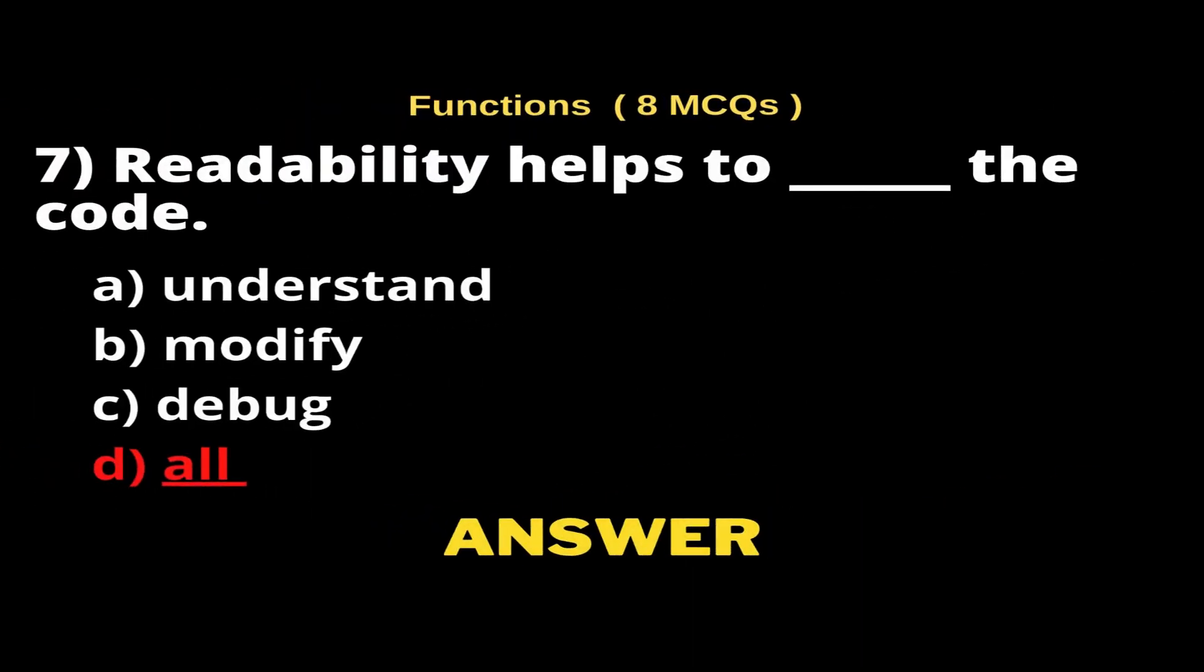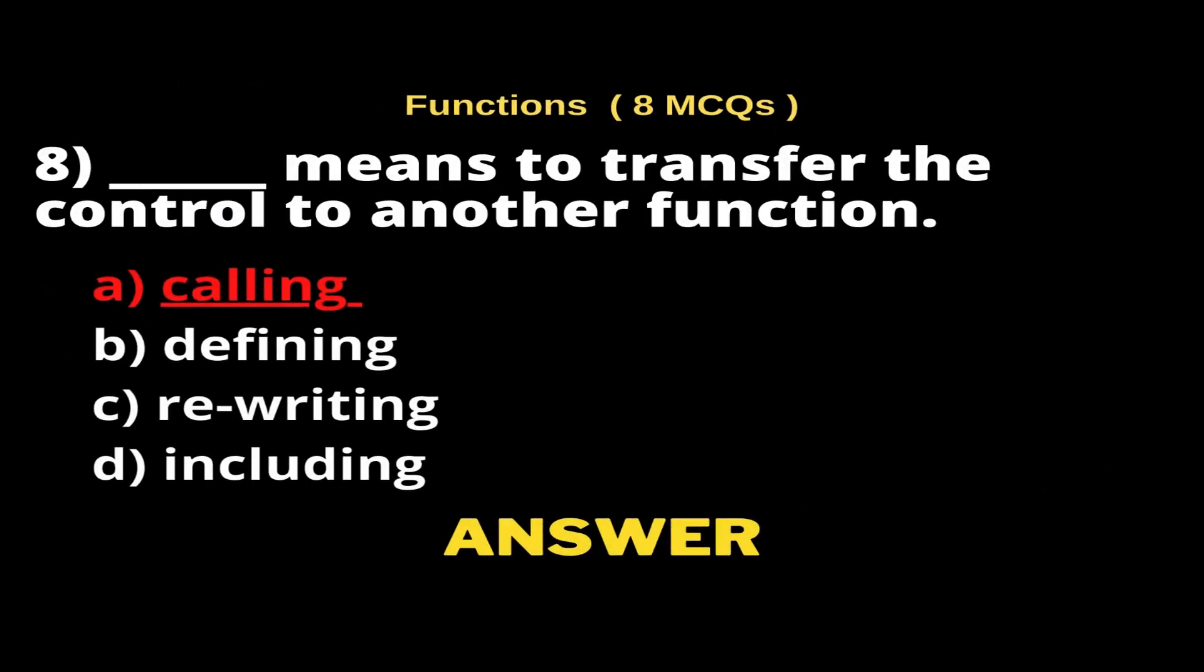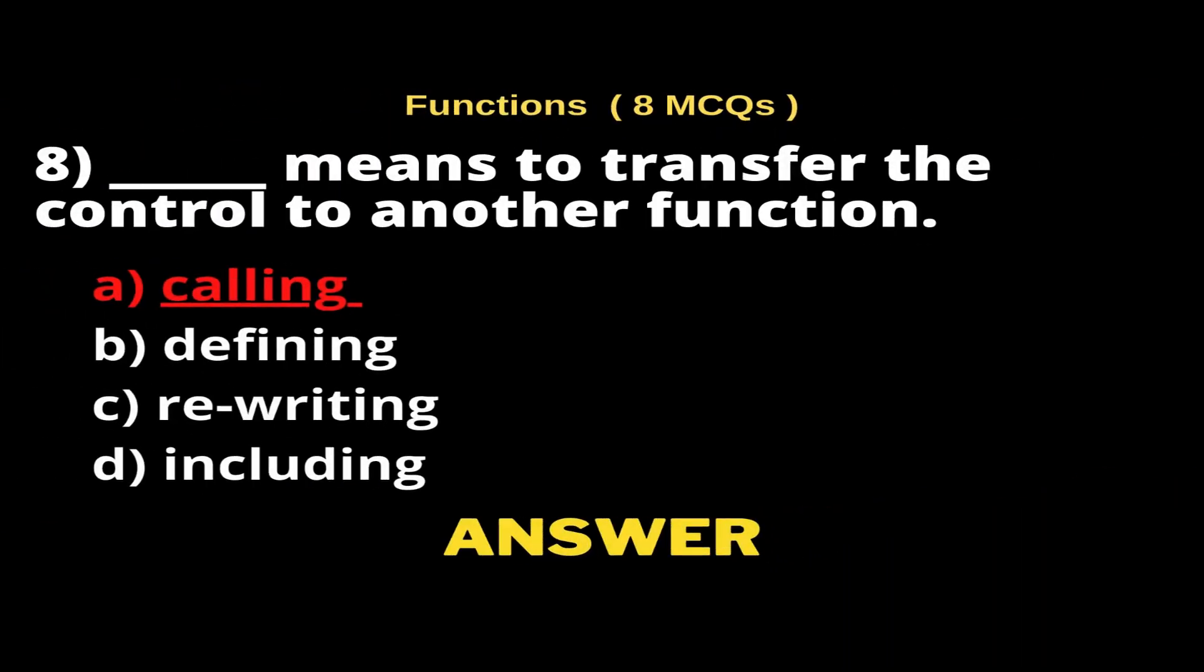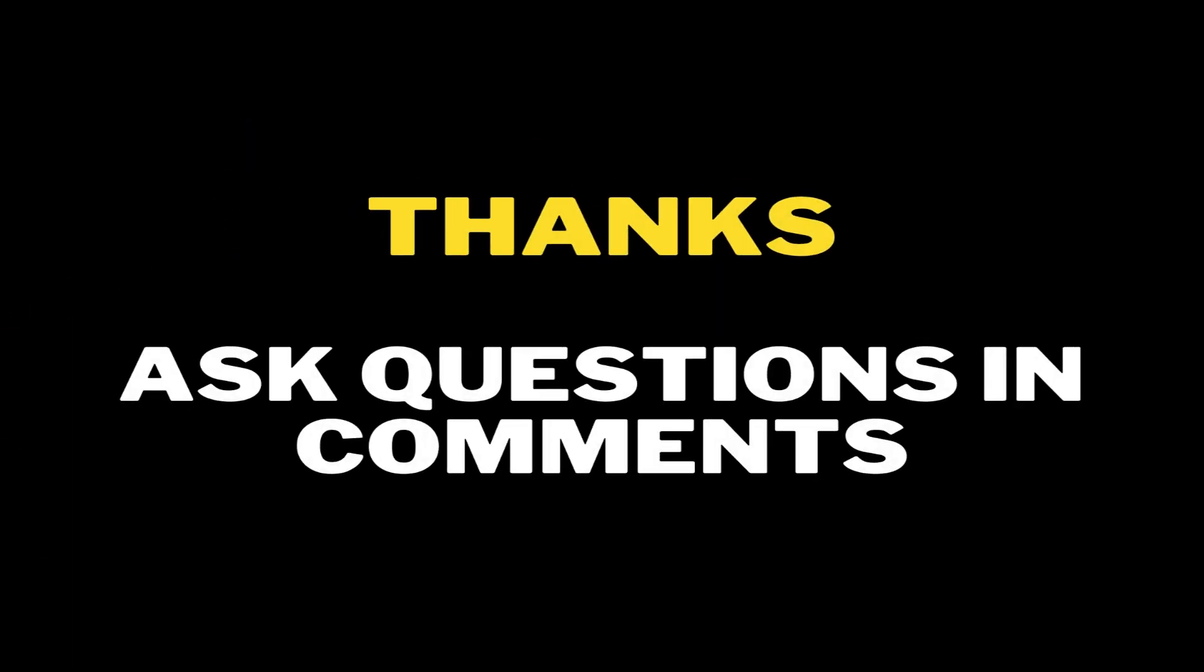Question 7: ___ means to transfer the control to another function. Options: A) Calling, B) Defining, C) Rewriting, D) Including. The right answer is Option A, Calling. Thank you very much for watching this video.